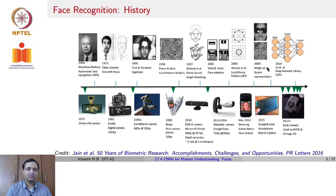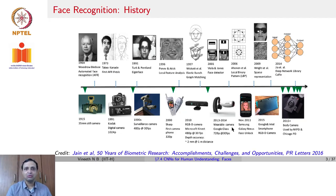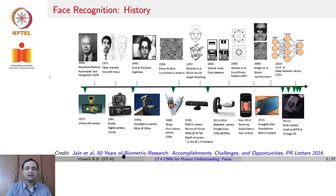From a hardware perspective, cameras began way back in 1915, with the digital camera coming in the 90s. Then face recognition shifted to surveillance cameras, camera smartphones, Kinect based devices — Microsoft Kinect based devices that you see on your Xbox — and Google Glass kind of devices towards the end of the first decade of the 21st century. In 2011, Samsung Galaxy had their face unlock feature implemented as part of the smartphone. Then came the RGBD camera, and more recently, body cameras that can do face recognition. All of this has been well chronicled in a recent article known as '50 Years of Biometric Research: Accomplishments, Challenges and Opportunities.' Do look at it if you have time.